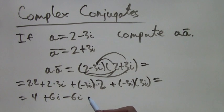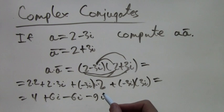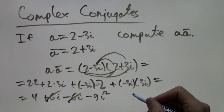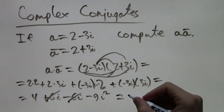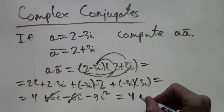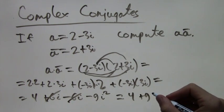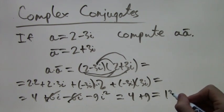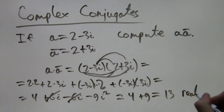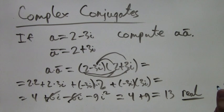Simplifying: we get 4 plus 6i minus 6i minus 9i squared. The plus 6i and minus 6i cancel out, leaving 4. Since i squared equals negative 1, we get 4 minus 9 times negative 1, which is 4 plus 9, and that equals 13. Notice that 13 is a real number — we started with a complex number, multiplied it by its conjugate, and got a real number.